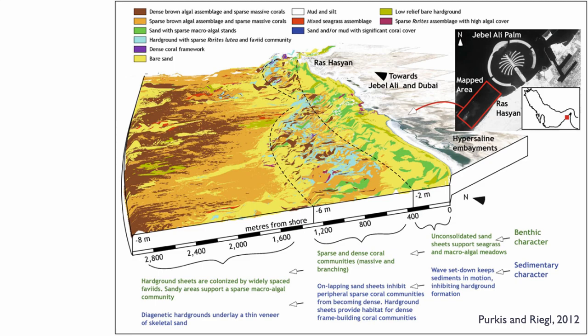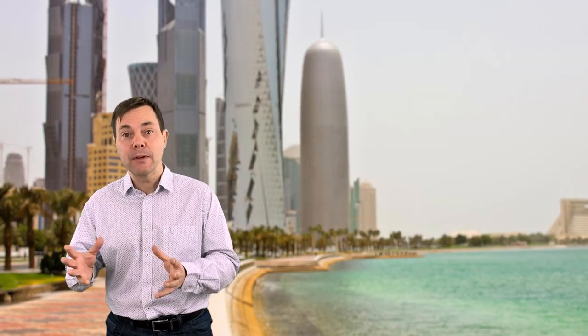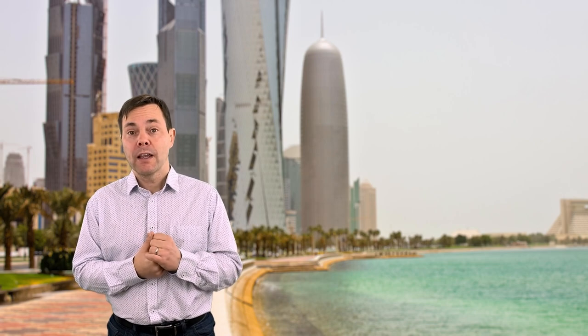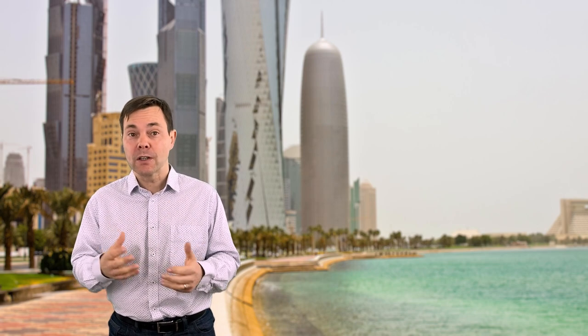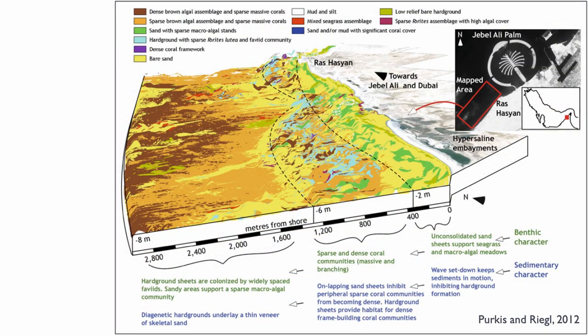Just like we noticed for the Bahamas and Australia, there is a patchiness when you look at the detail of the distribution of facies, and that can have implications for reservoirs later in production if this becomes a reservoir.